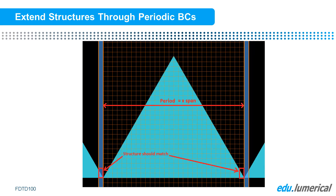When using periodic or Bloch boundary conditions, a similar issue exists. These boundaries are one mesh cell thick, as shown in the shaded blue region. To obtain the most accurate results, the structure should be defined within the boundary condition region. This is most easily accomplished by drawing an extra unit cell of the structure on each side of the simulation region.